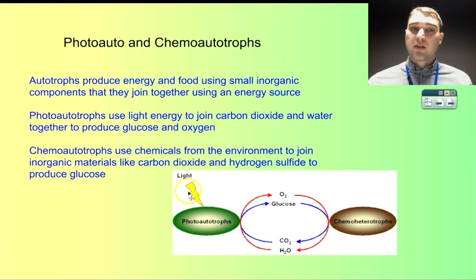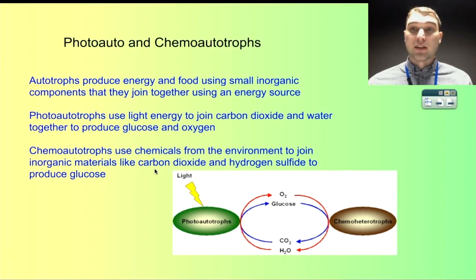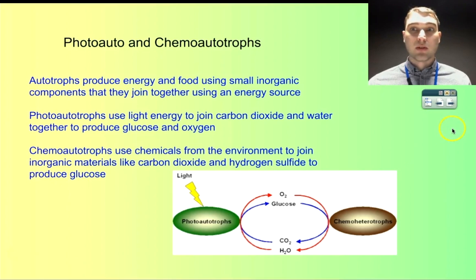Chemo-autotrophs are different — they don't use light energy. They use energy from fairly reactive chemicals to drive that process. They absorb these highly reactive chemicals from the environment and use the energy from those reactions to join carbon dioxide together to make glucose. For example, they could use carbon dioxide and hydrogen sulfide, where the hydrogen sulfide provides the energy to produce glucose from the carbon dioxide. Both carbon dioxide and hydrogen sulfide are small inorganic compounds, and glucose is a large molecule.